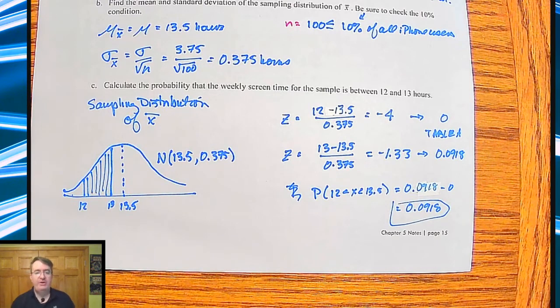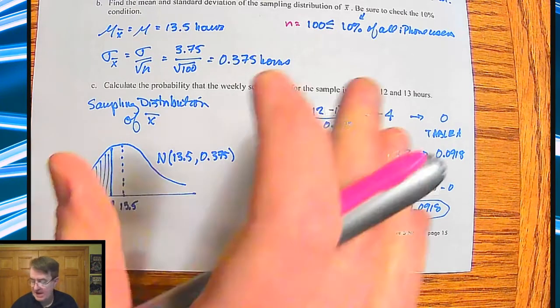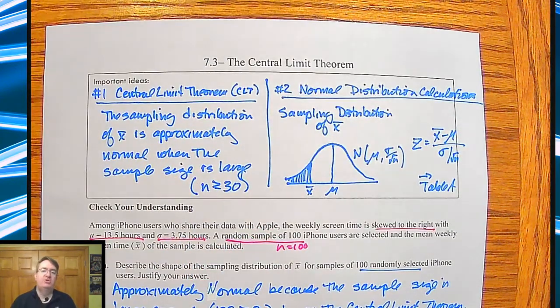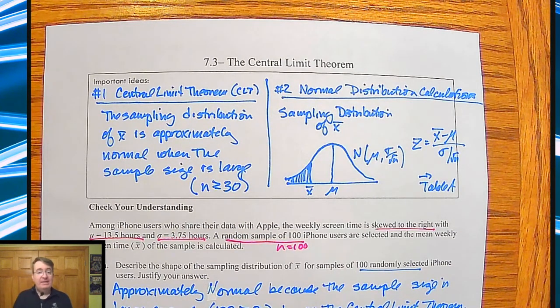Again, you could use the normal CDF if you wanted to. Just make sure you label all the parts. So this central idea of the central limit theorem is going to change a lot of what we do. It allows us to use things that we already know how to do. And so much of math is that, right? How can I take what I'm seeing and move it into a place that I already know how to do it? So I hope it makes some sense. If not, drop some questions down below. Like, comment, subscribe. And we'll see you for the last section of 7.3 soon.